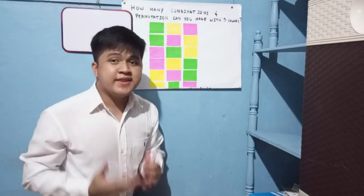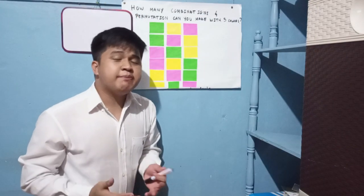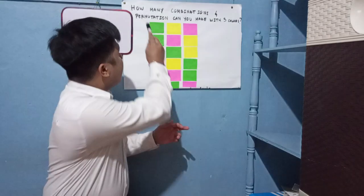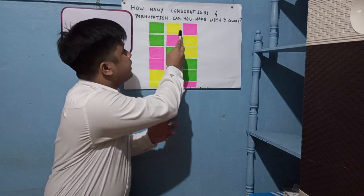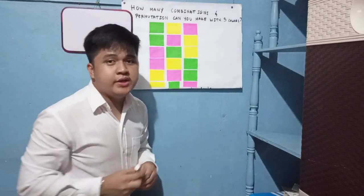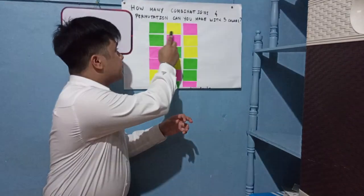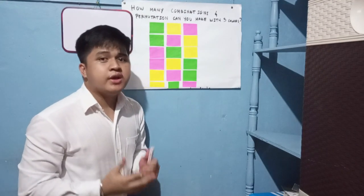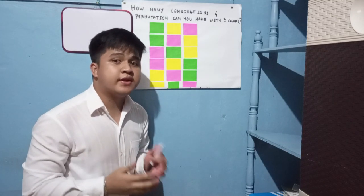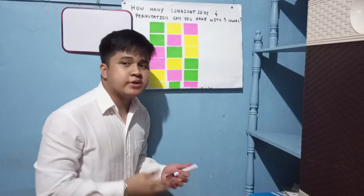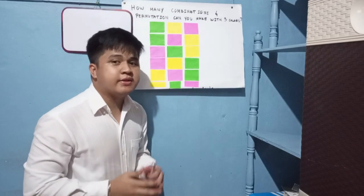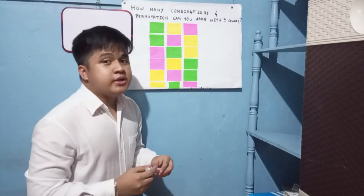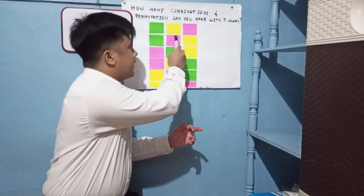Let's use another example to illustrate the difference between combination and permutation. How many combinations and permutations can we make with three colors: green, yellow, and pink? For combination, the order of the color does not matter, or whichever comes first does not matter. Therefore, the combination is only one, which is color green, yellow, and pink.